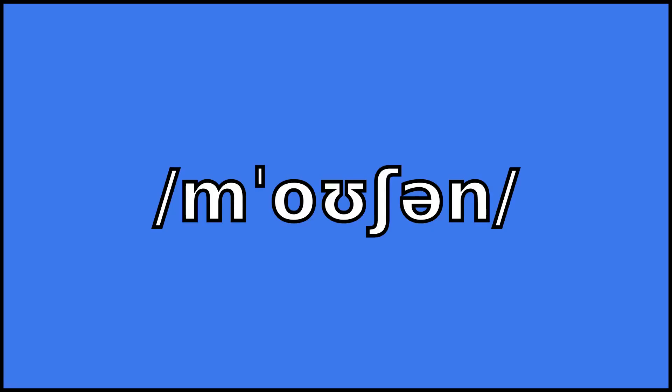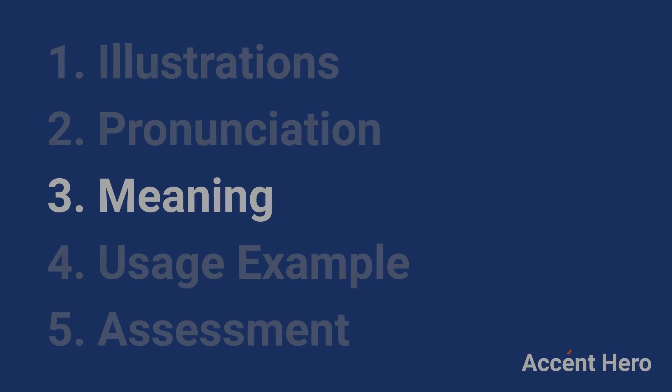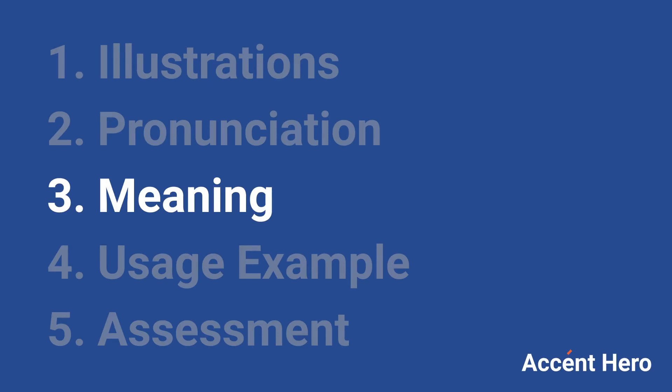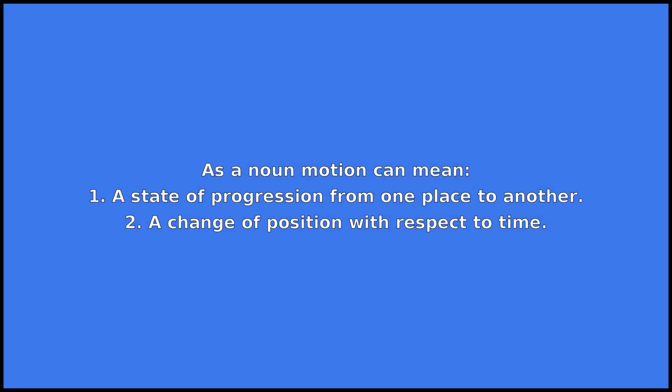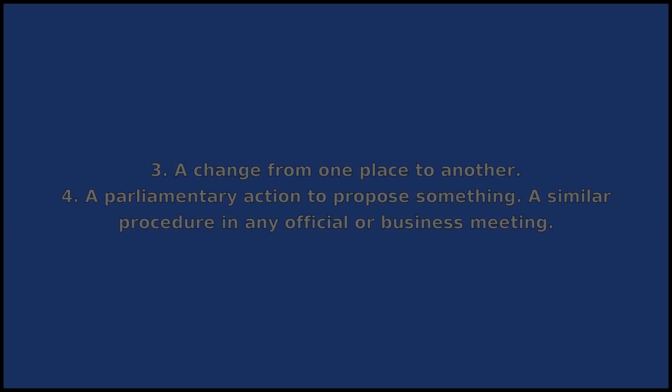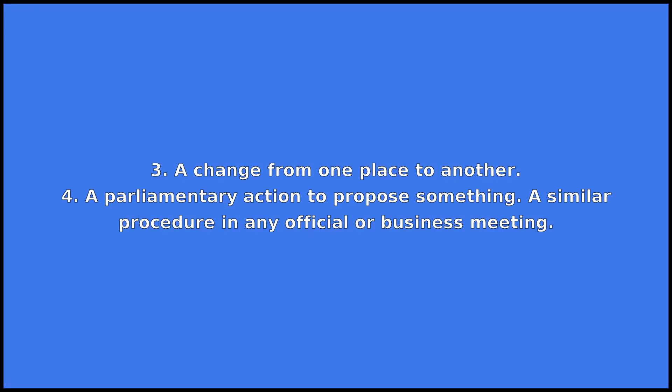Motion can be a noun or a verb. As a noun, motion can mean: 1. A state of progression from one place to another. 2. A change of position with respect to time. 3. A change from one place to another.